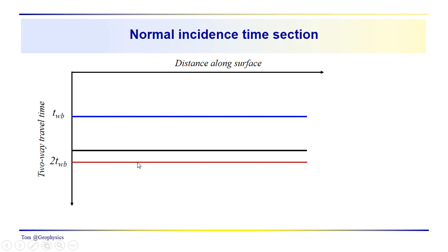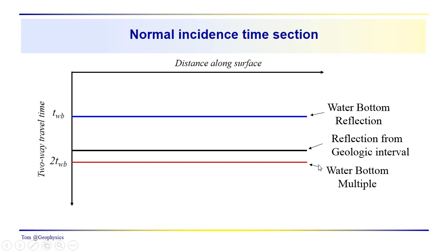here would be the two-way water bottom time. This would be the two-way, two times the two-way water bottom time. So, this would be our water bottom reflection. This would be a primary reflection from some geologic interval.